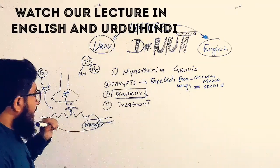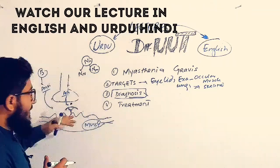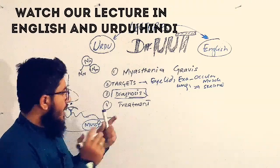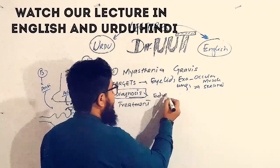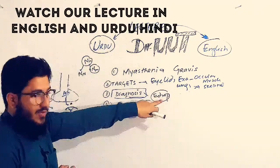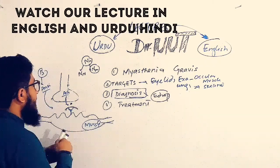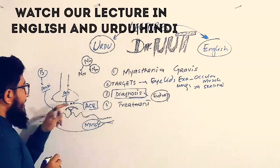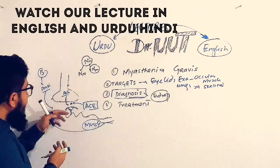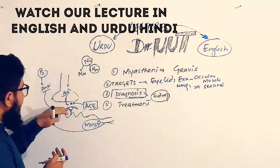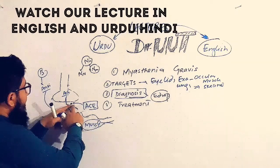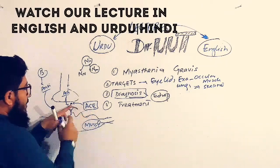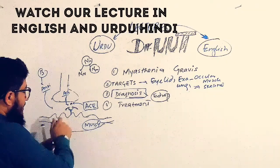How do we diagnose whether a person is a myasthenic patient or not? We have the Tensilon test — the edrophonium test. In edrophonium testing, this injection is given to target the enzyme acetylcholinesterase, which is responsible for breaking down acetylcholine. Even though acetylcholine is available, antibodies are also present covering the receptor, and then the acetylcholinesterase breaks down the remaining acetylcholine.